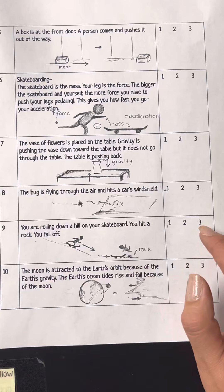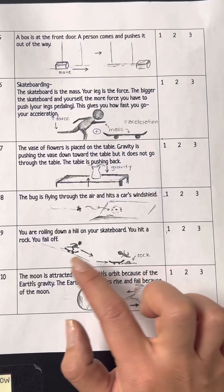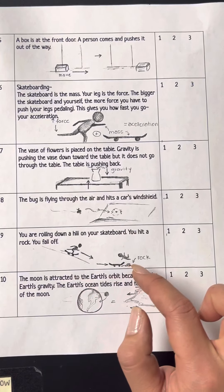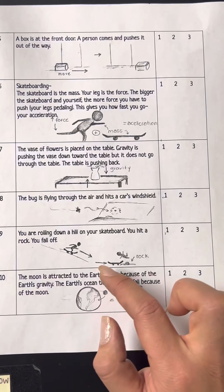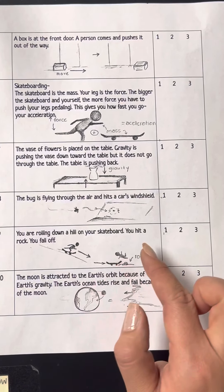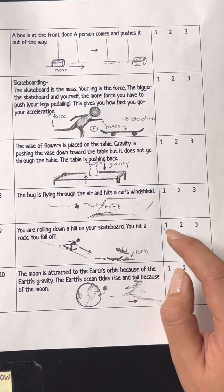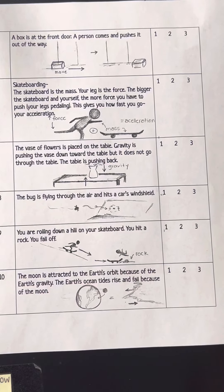Number 9: You are in motion, and then a rock — an outside force — stops you, and you fall off. Which one is it? Is it Law 1, Law 2, or Law 3?